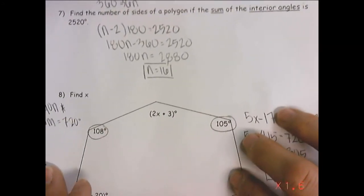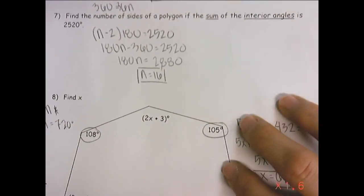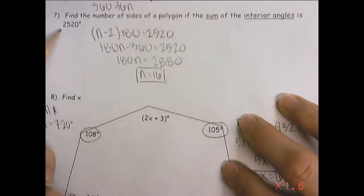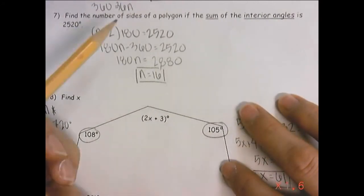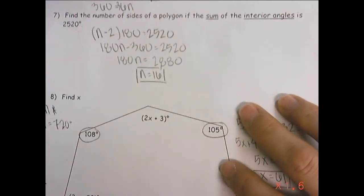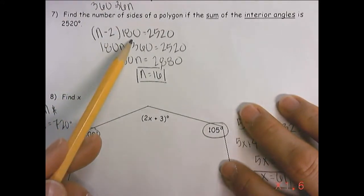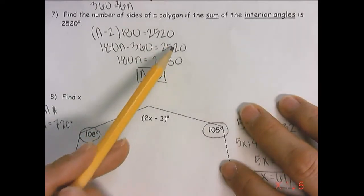Down here, find the number of sides of a polygon if the sum of the interior angles is 2520. So this time it's just the sum. It's the sum that's the important part. Okay, so we're going to do n minus 2 times 180 equals 2520.